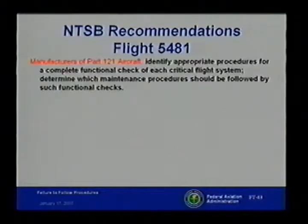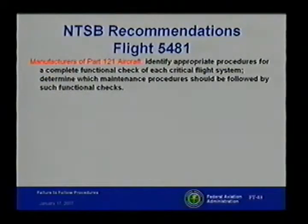One of the things they found missing was a safety culture — you've got to have the safety culture throughout the entire operation. The NTSB recommendations included: for Part 21 aircraft manufacturers, a functional check of each critical flight system; for Part 121 air carriers, modification of existing maintenance manuals to contain procedures at the end of maintenance for a complete functional check of each critical flight system. Additionally, Part 121 air carriers should implement a program where manufacturers review all of the work cards to ensure accuracy and usability of the instructions.